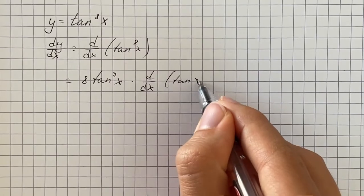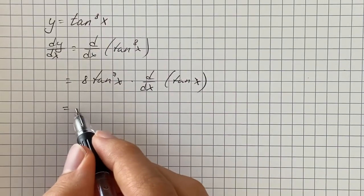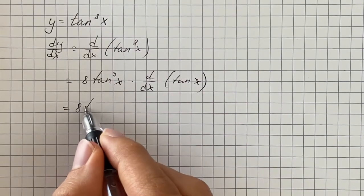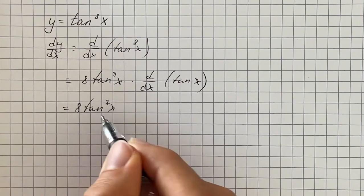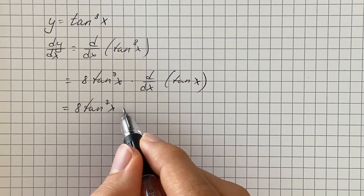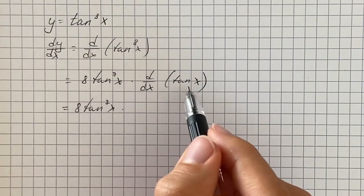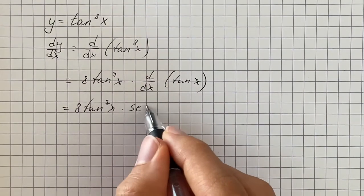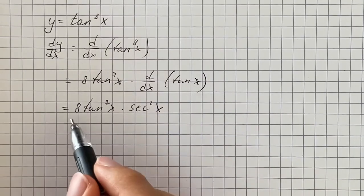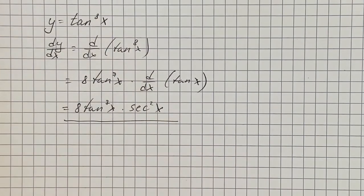Therefore we get 8 tangent to the seventh power of x times the derivative of tangent of x, which is secant squared of x. So that's going to be our answer.